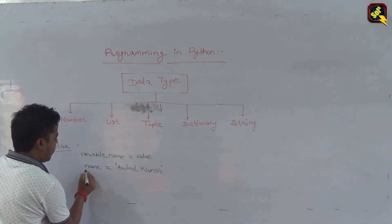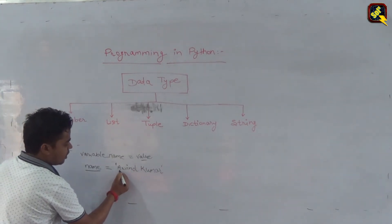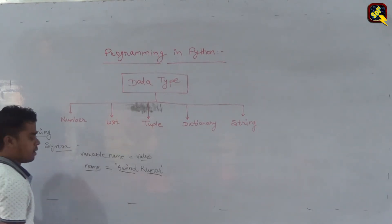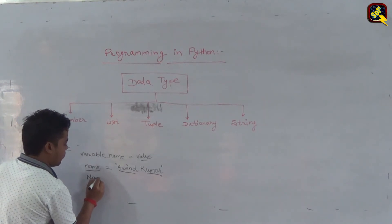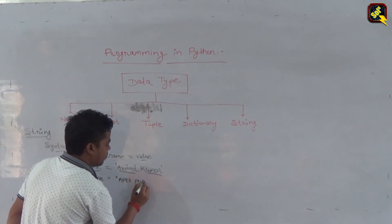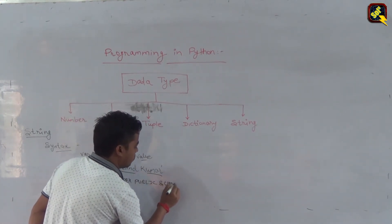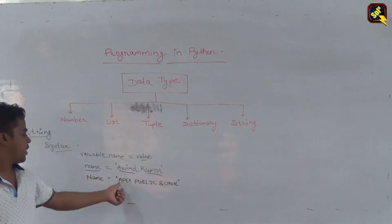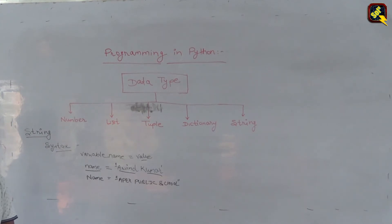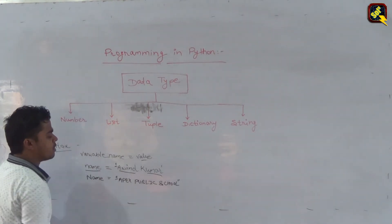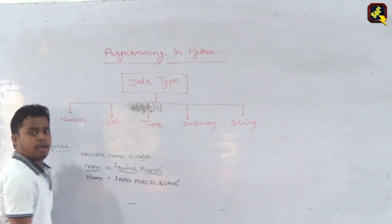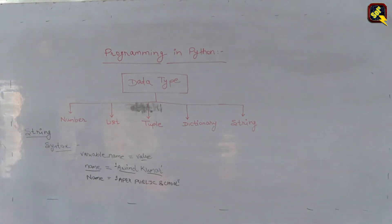Here, name is the variable name and the value Arvind Kumar is enclosed with single quotes, which indicates it is a string variable. Similarly, we can also write name equal to Arvind Kumar within double quotes. Single quotes and double quotes both indicate the starting and ending of the string.